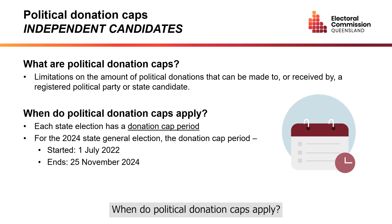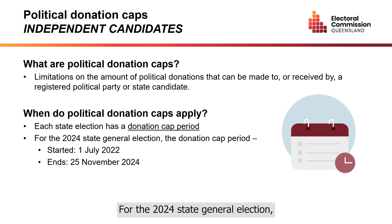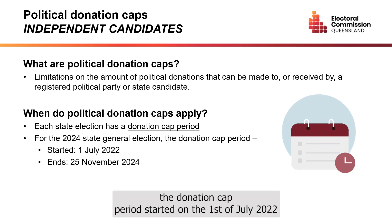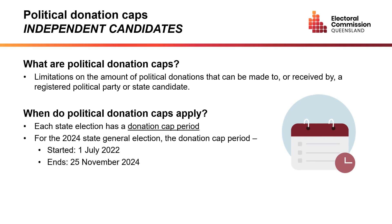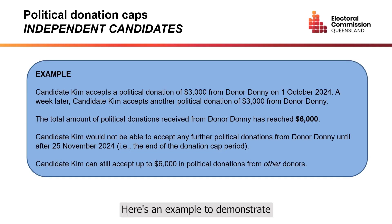When do political donation caps apply? Each state election has a donation cap period — this is the period of time when the cap applies. For the 2024 state general election, the donation cap period started on the 1st of July 2022 and ends on the 25th of November 2024. Here's an example to demonstrate the caps in more detail.